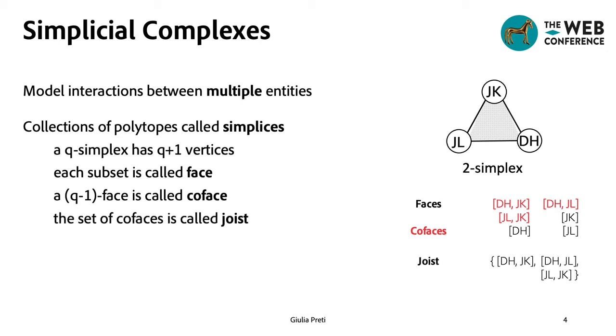The set of co-faces is also called a joist. And finally, we note that complexes are a special kind of hypergraphs that satisfy the downward closure property, meaning that if a simplex belongs to the complex, then all its faces must belong to the complex as well.